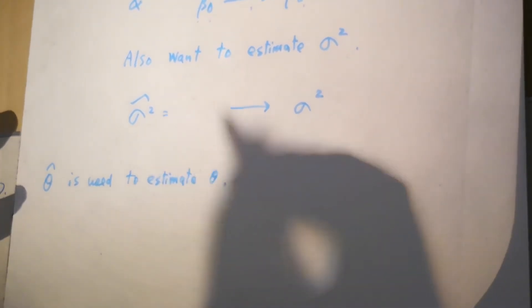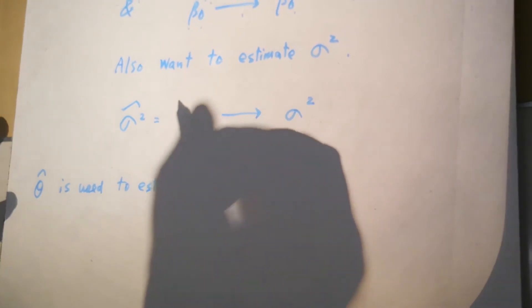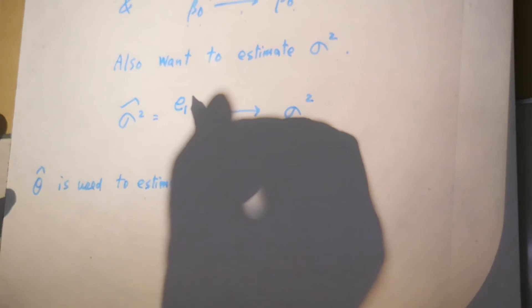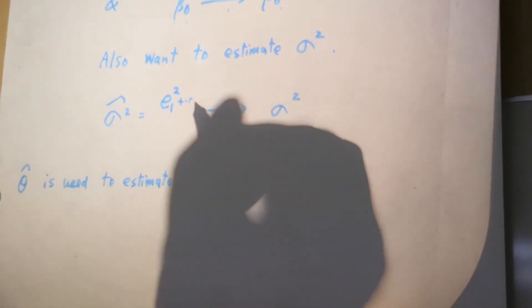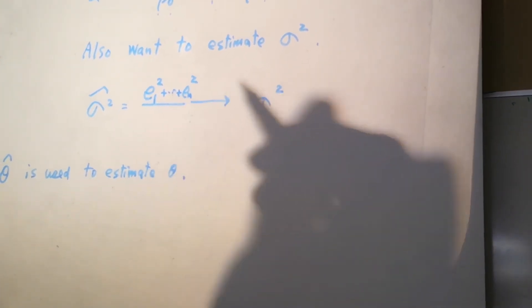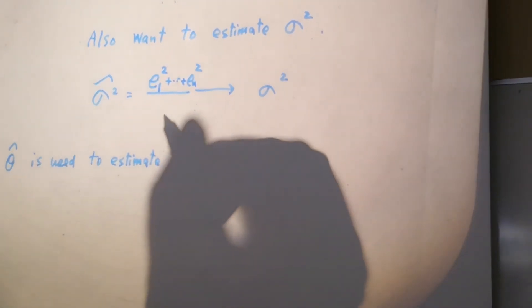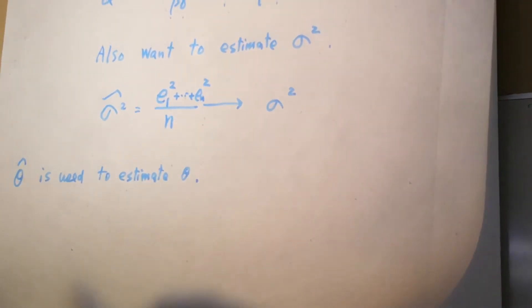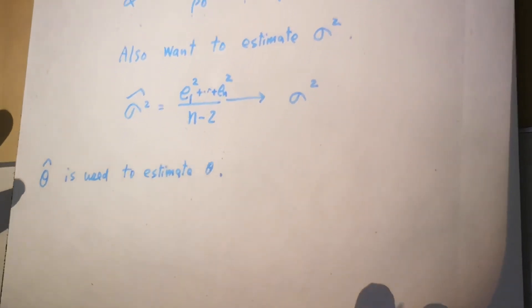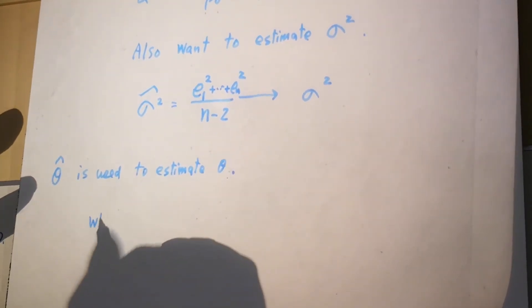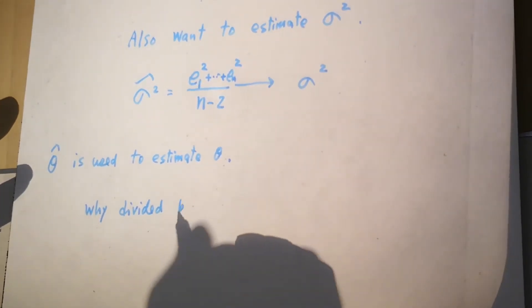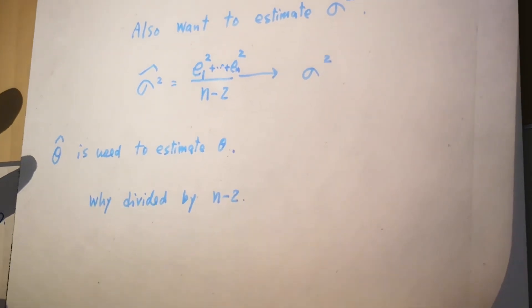This size is estimated by e₁² + e₂² + ... + eₙ² divided by how much? Most people say divided by n, but that's wrong. You should divide by n minus 2. Why divide by n-2?